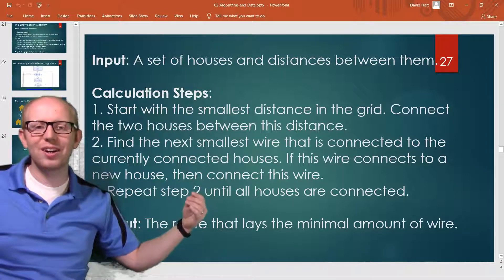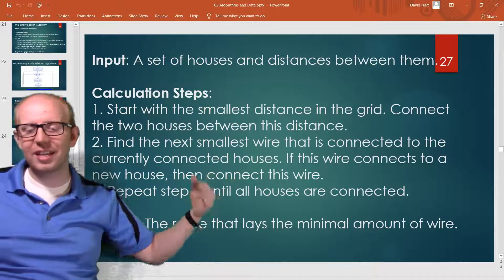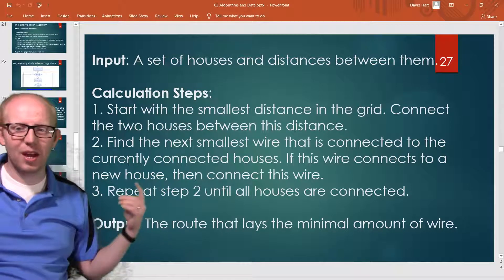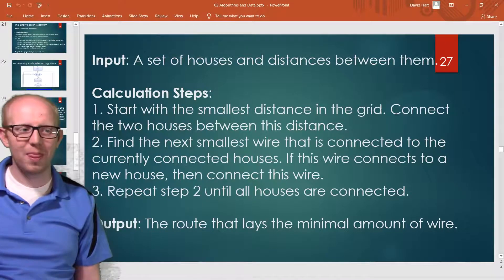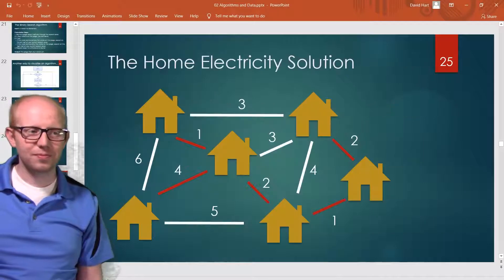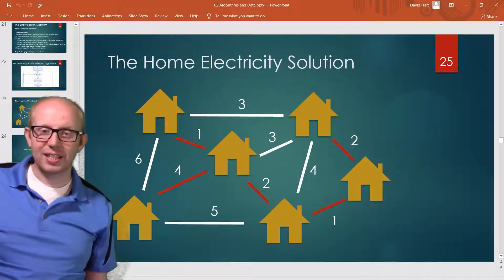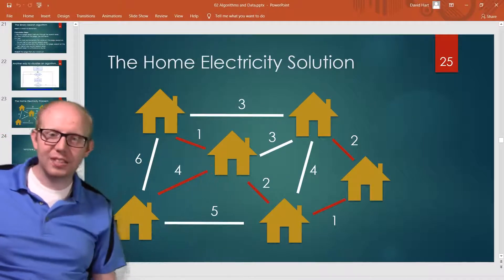Meaning find the next shortest wire, if that house is not already connected add it. And we just repeat this step until all the houses are connected. And there you go, that's how you solve any setup like this.